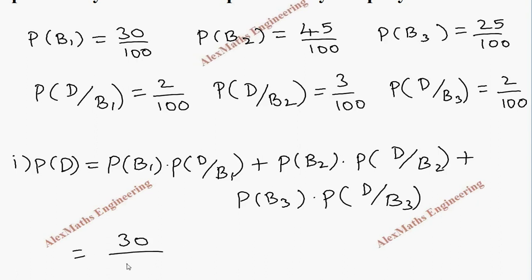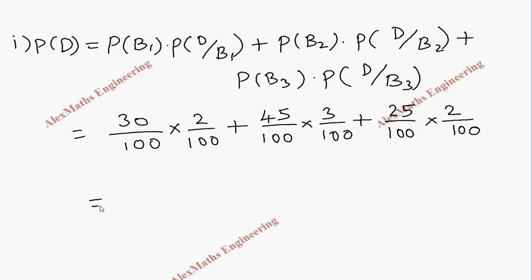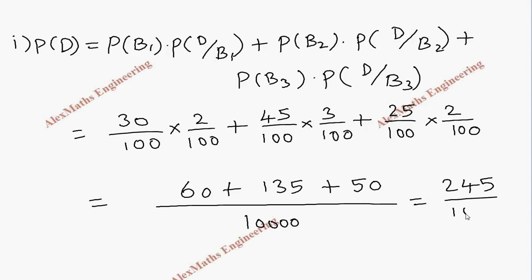Now let's substitute the values. This is 30 by 100 into 2 by 100, and this is 45 by 100 into 3 by 100, and this is 25 by 100 into 2 by 100. Now common denominator is 100 into 100 which is 10,000. And numerator is 60 plus 135 plus 50. By adding the numerator, we get 245 divided by 10,000.